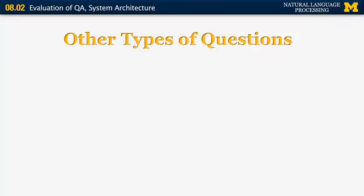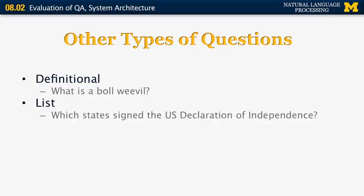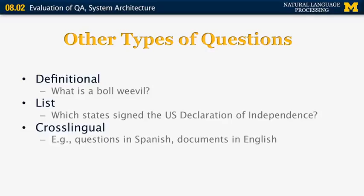In later TREC evaluations, additional question types were introduced: definitional questions (e.g., 'What is a boll weevil?'), list questions (e.g., 'Which states signed the U.S. Declaration of Independence?'), and cross-lingual questions where questions could be in Spanish while documents were in English. Finally, series questions were introduced — one initial question followed by dependent follow-up questions. If you get one wrong, you're unlikely to get the rest correct, because you're essentially going off on a tangent.